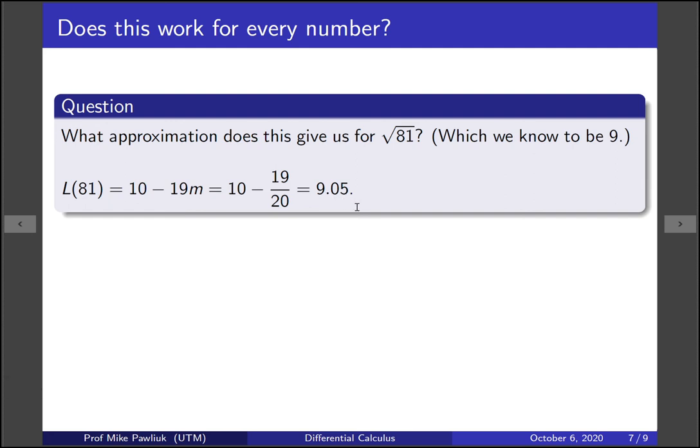So our approximation isn't perfect it's off by 0.5 but it still did a pretty reasonable job the square root of 81 is indeed approximately 9.05.